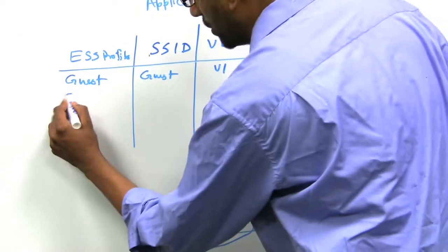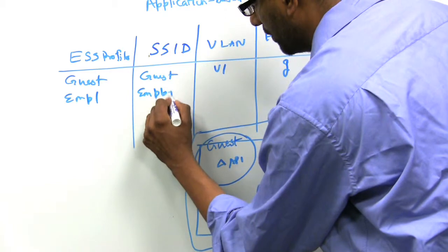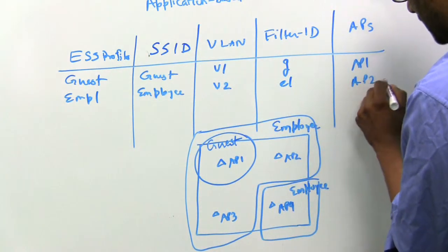And now we'll call this EMP1, SSID is employee, V2, call this E1, call this AP2 and AP3.